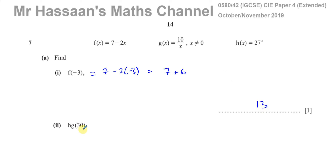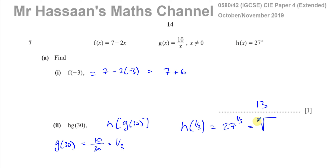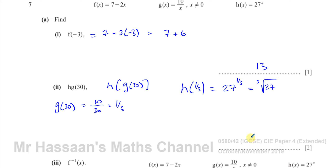Next, find hg(30). First you find what g(30) is, then substitute that into function h. g(30) is 10 over 30, which is one third. Then we take function h and replace the x with one third, so we need h(1/3), which is 27 to the power of one third. Now 27 to the power of one third means the cube root of 27, which is 3.